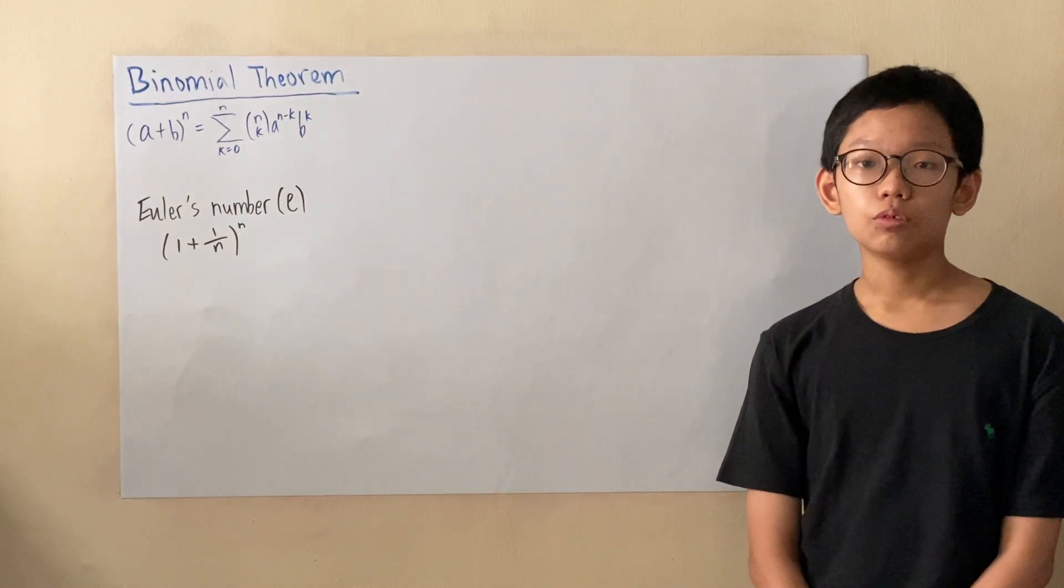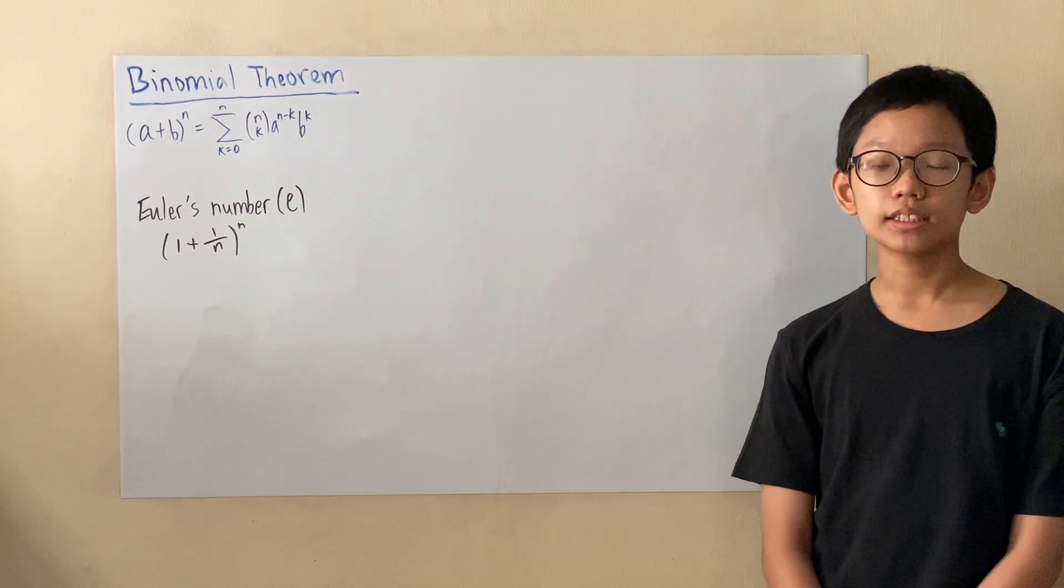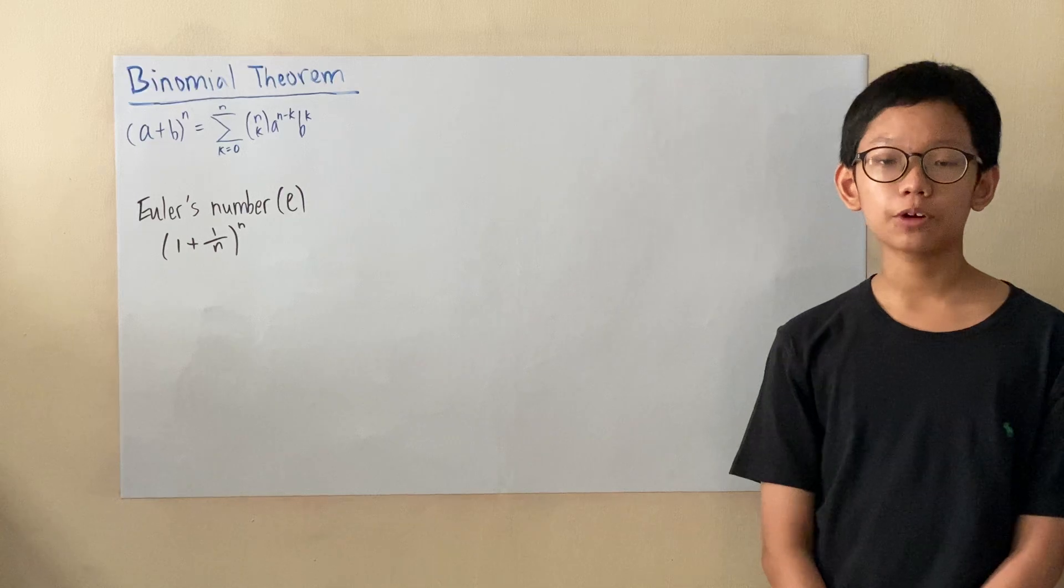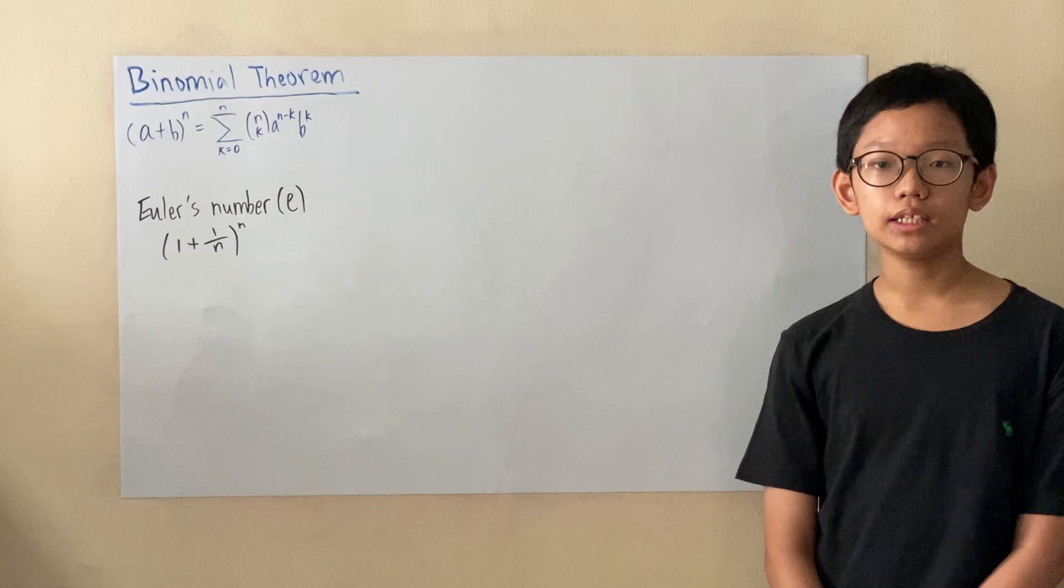So now we'll be using the binomial theorem to calculate Euler's number. And just as a quick recap, the binomial theorem helps us to easily expand (a+b)^n, where n can be any number.